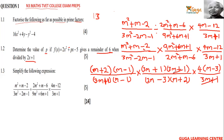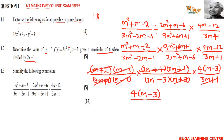And then m − 1 also cancels with m − 1. You've got m + 2 cancelling with m + 2, and 3m + 1 cancelling with 3m + 1. So you're left with 4(m − 3) over (2m − 3). That is the final simplified answer.